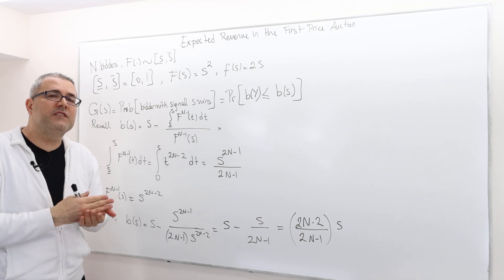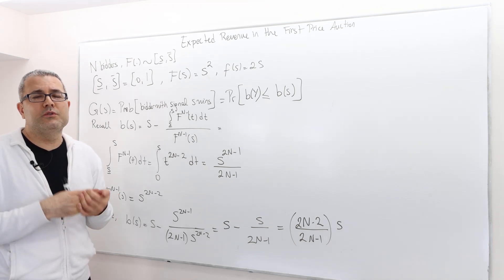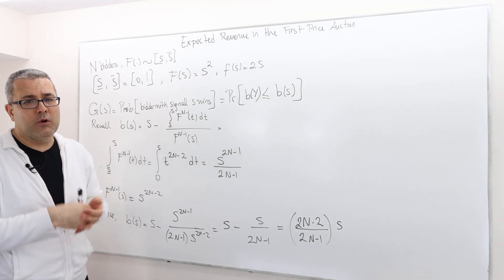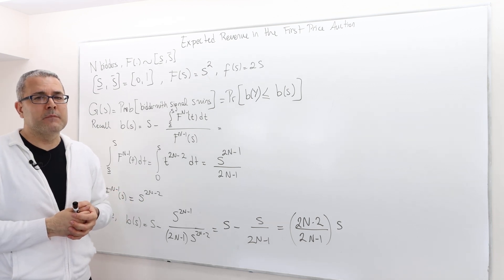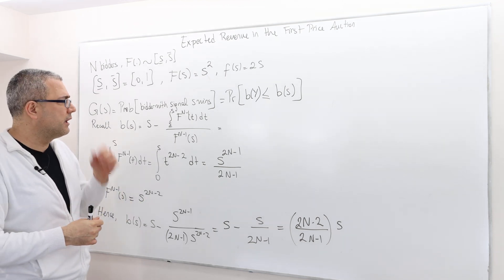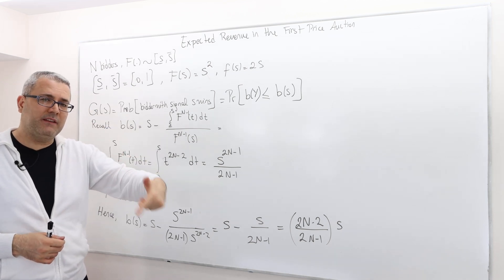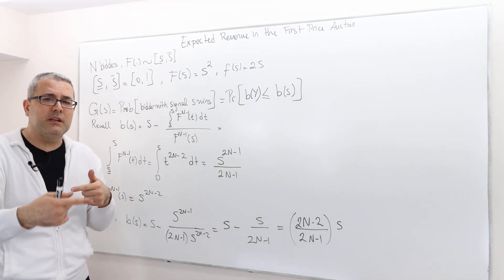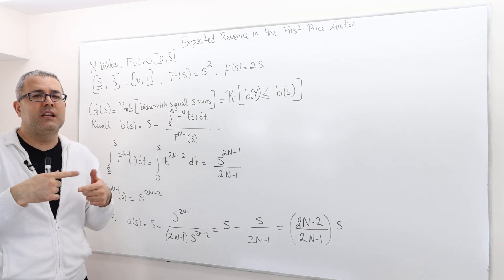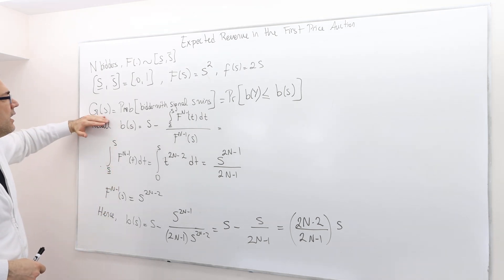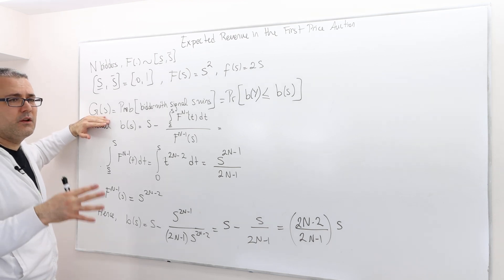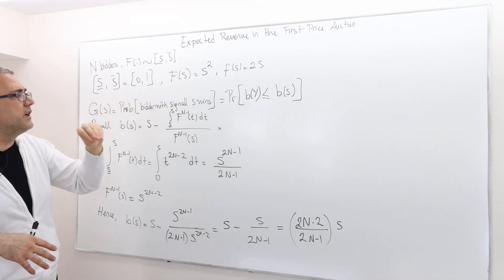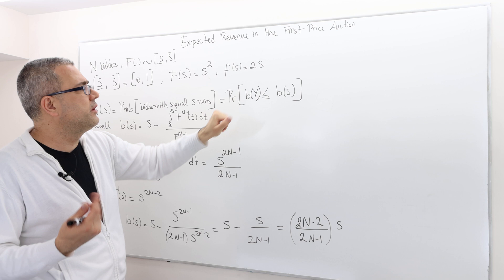First, I'm going to calculate the expected payment of a bidder whose signal is s. Then I'll calculate the ex-ante expected payment m, and multiply it by n to get the expected revenue of the seller. To calculate the expected payment of the bidder with signal s, I need to first calculate the probability that the bidder with signal s wins the auction — I'll call this g(s).